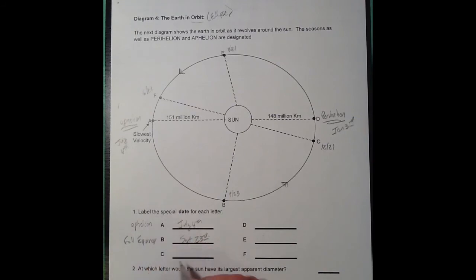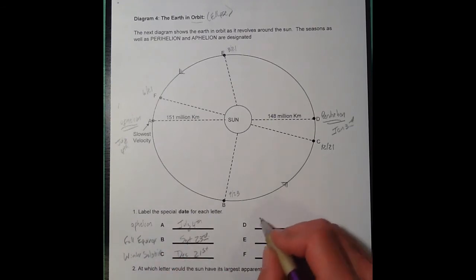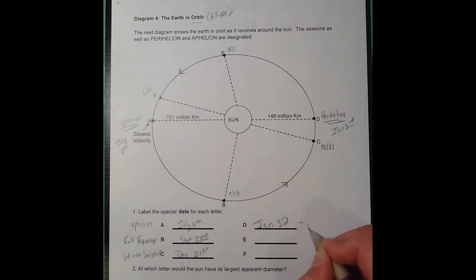C is going to be December 21st, that would be our winter solstice. D is right around January 3rd, but that's perihelion. We'd be having our highest orbital velocity at that point.